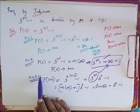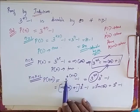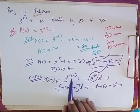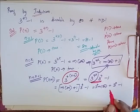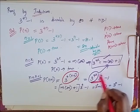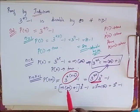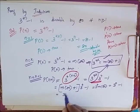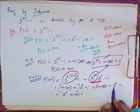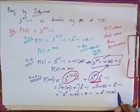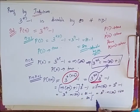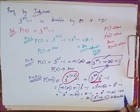Now I consider n equal to K plus 1. P of K plus 1 equals 3 power 4 into (K plus 1) minus 1. I split 3 power 4(K+1) as 3 power 4k into 3 power 4, and write minus 1. Instead of 3 power 4k, I replace it with (some multiple of 80 plus 1), giving (80M + 1) into 3 power 4 minus 1. Expanding: 3 power 4 into 80M plus 81 minus 1, which is 3 power 4 into 80M plus 80. Taking 80 as a common factor: 80 times (3 power 4 into M plus 1). This is surely divisible by 80, since it is a multiple of 80.